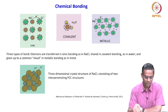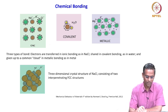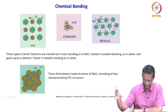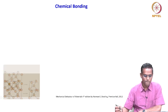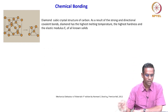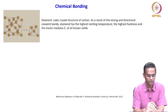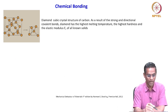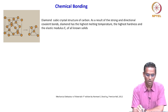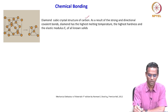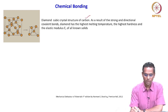Here is the three-dimensional crystal structure of sodium chloride consisting of two interpenetrating FCC structures — an ionic solid. What you are seeing here is another popular material: diamond, which has a diamond cubic crystal structure of carbon. It is an allotrope of carbon, as a result of strong and directional covalent bonds.